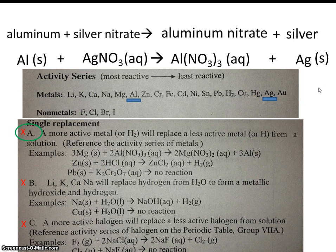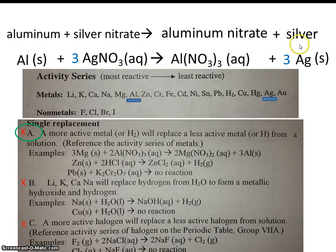And then, of course, our last step would be to balance. So notice that we have three nitrates on the right. So we're going to make three nitrates on the left. That made three silvers on the left. So, of course, we need three silvers on the right. Alright, and this reaction is complete.